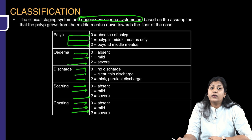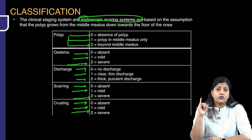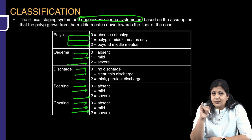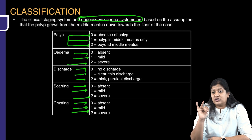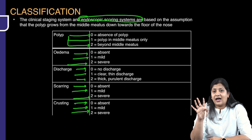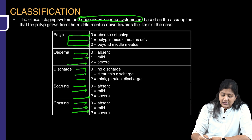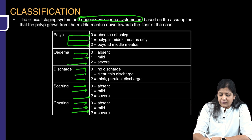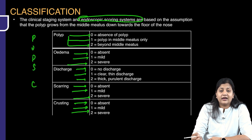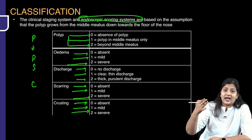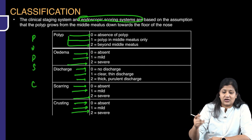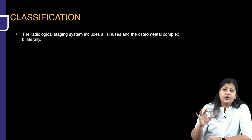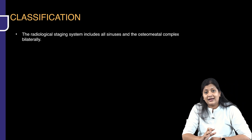So this is how you grade endoscopically — look for presence of polyps, edema, discharge, scarring, and crusting. A useful mnemonic is PODS: Polyp, Edema, Discharge, Scarring, and Crusting. This is your endoscopic or clinical staging system.